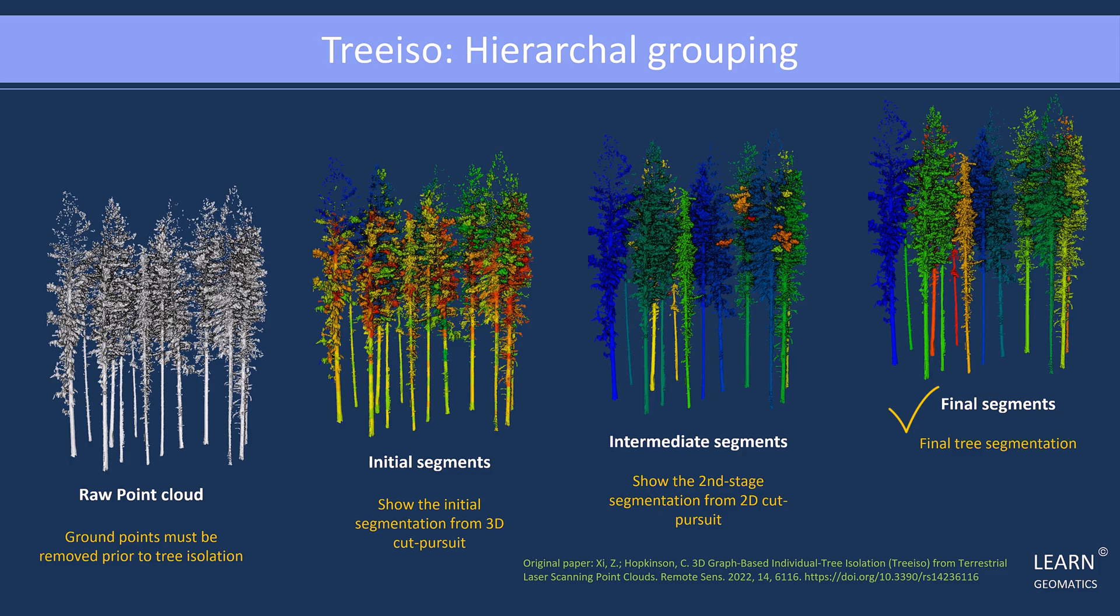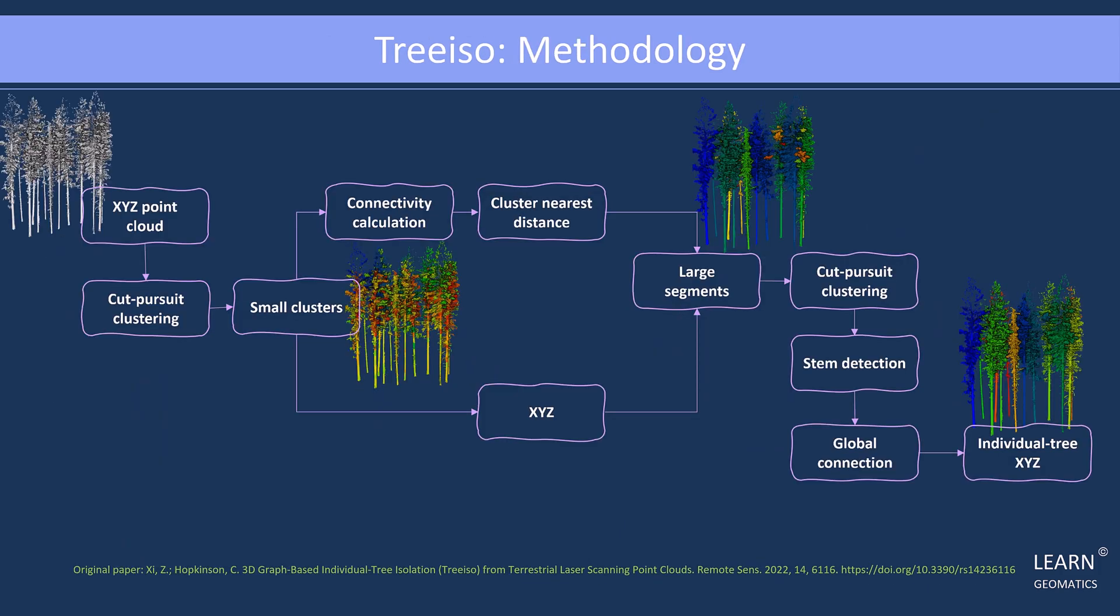For more theoretical details, there is no paper better than the one below. But how does TreeISO work? The process initiates with an XYZ point cloud, and it follows a two-stage cut pursuit clustering approach. This method capitalizes on the understanding that trees exhibit two levels of scales: a branch level, with high 3D freedom of variation, and a whole tree level, where the 3D freedom reduces to approximately 2D because of the uniform upward growth direction of trees.